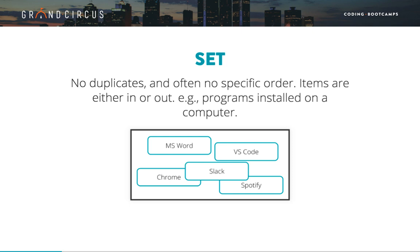Set. In contrast to a list, a set is a collection of data that doesn't necessarily have an order, and it cannot contain duplicates. The idea of a set is that elements are either in or out — the set either contains that value or it does not. For example, a set could be useful for tracking what programs are installed on your computer. You cannot install a program more than once, and you don't need to track the order you installed them. C-sharp, Java, and JavaScript all have a set data type built in.